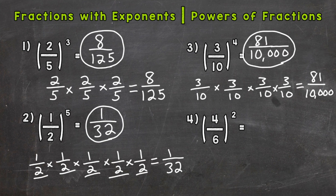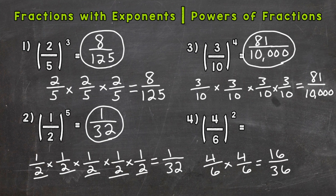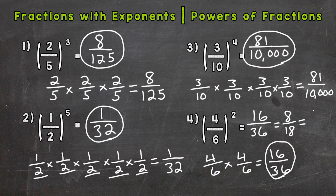And lastly, number four: four over six to the power of two. So we expand four-sixths out twice and multiply straight across. Four times four is sixteen, six times six is thirty-six, so sixteen thirty-sixths. Which can be simplified — we can divide both by two and get eight eighteenth, which can be divided by two again, giving us four-ninths as our simplified version of sixteen thirty-sixths. Or you could have divided both sixteen and thirty-six by four right off the bat and simplified in one step. So four-ninths for number four, or the unsimplified answer of sixteen thirty-sixths.